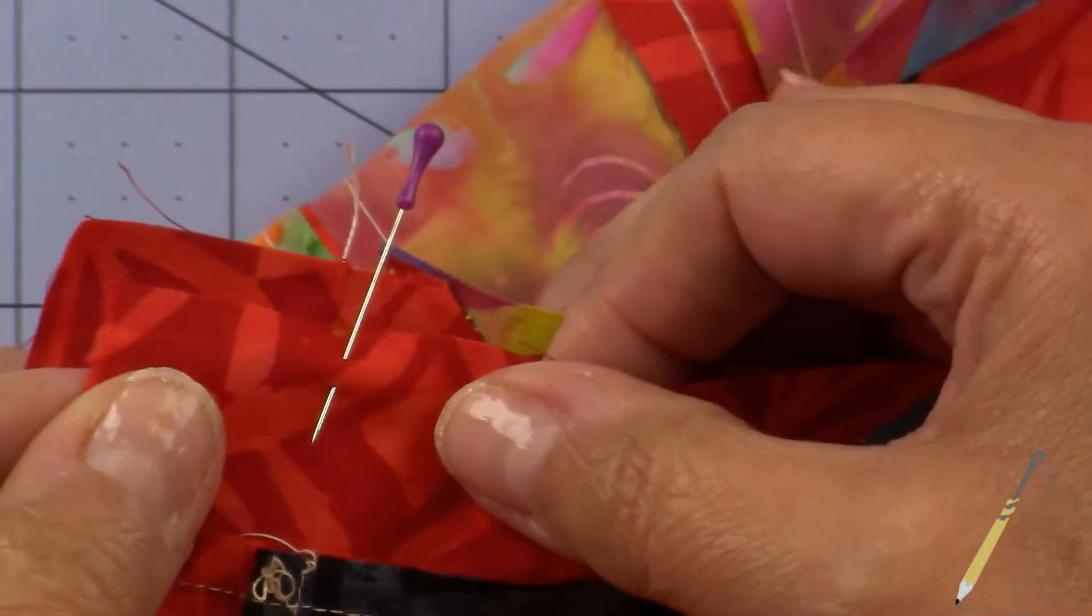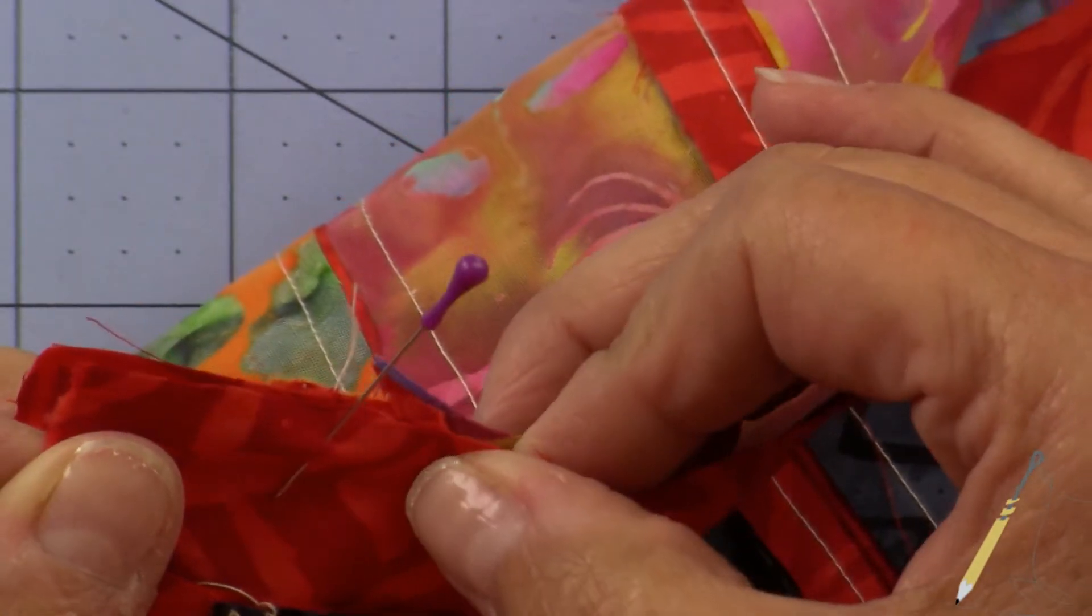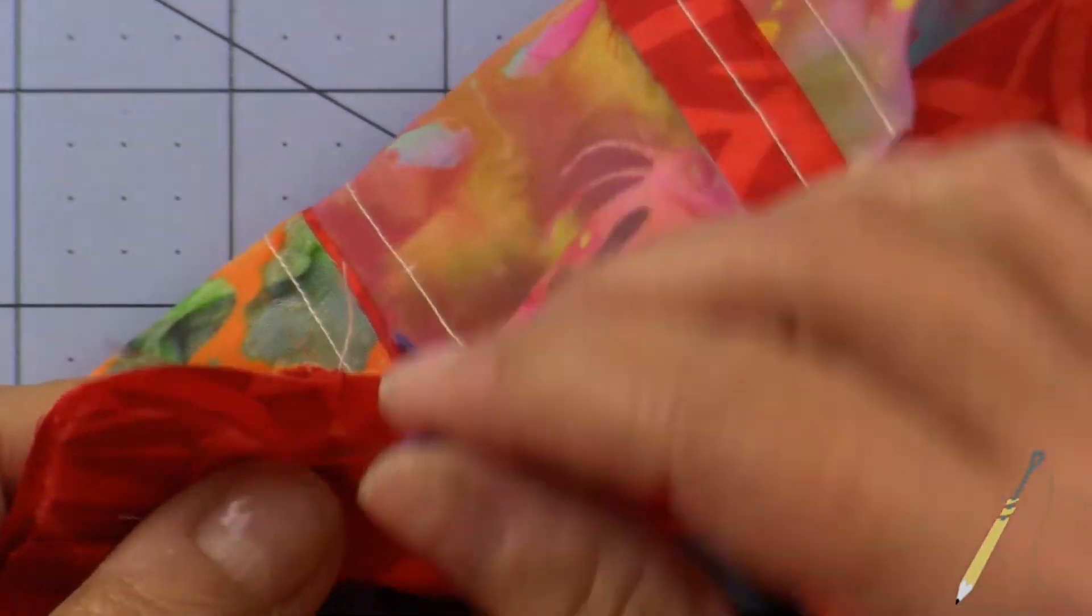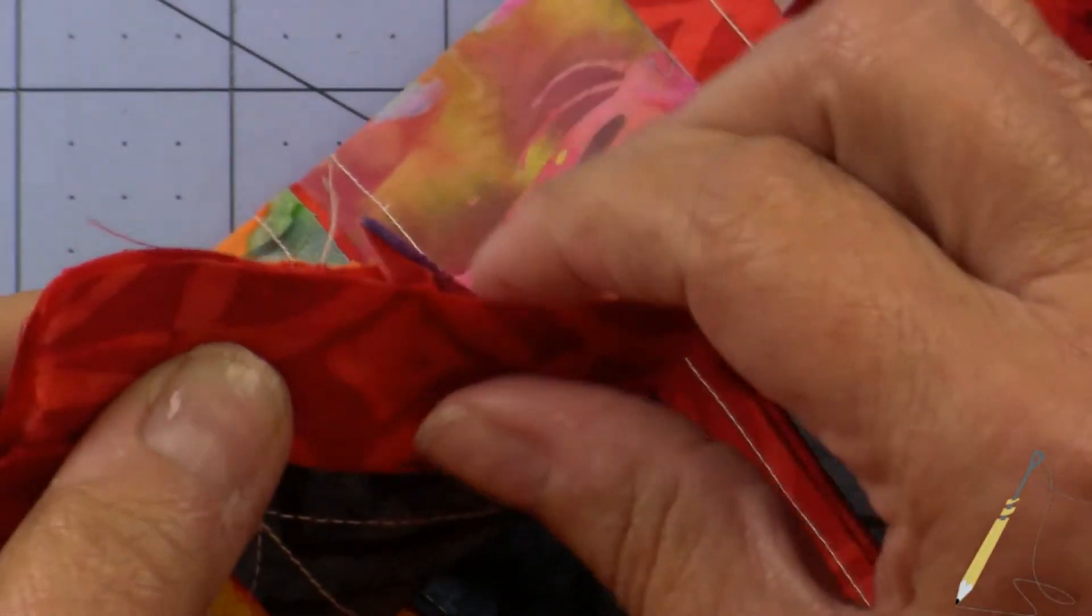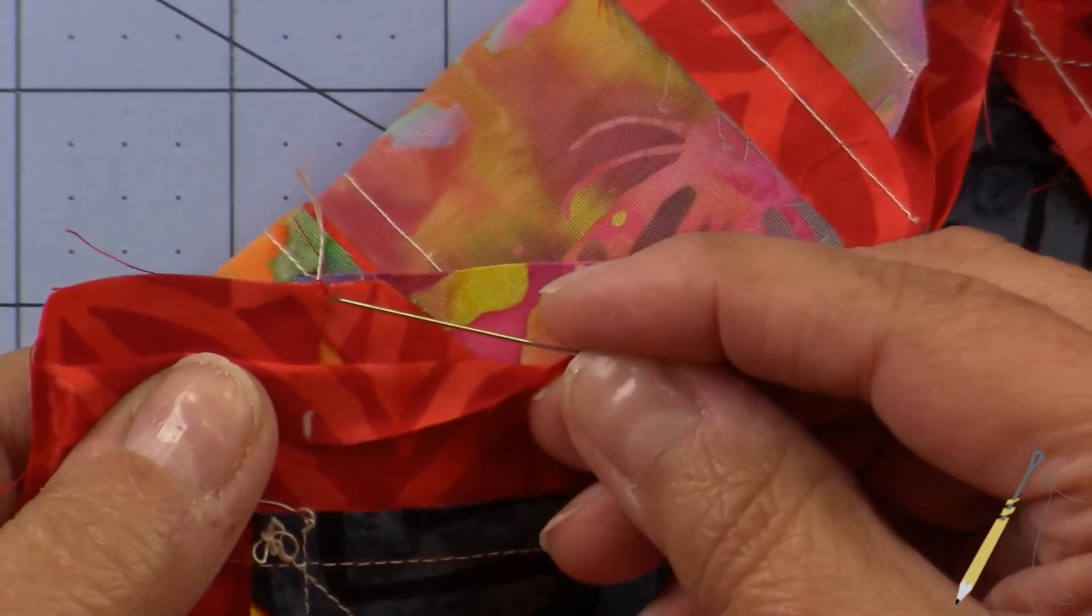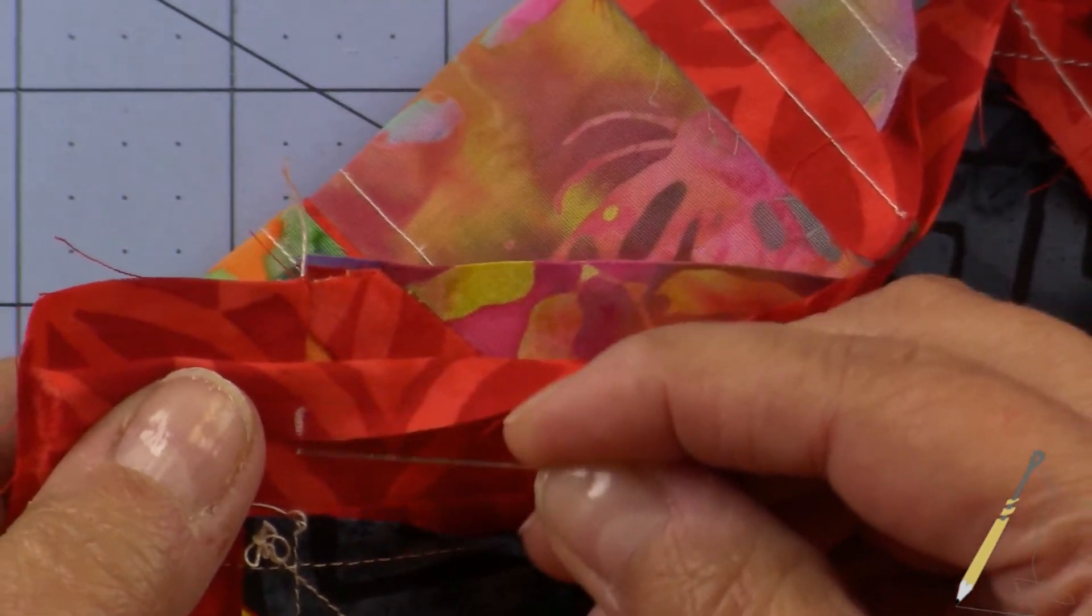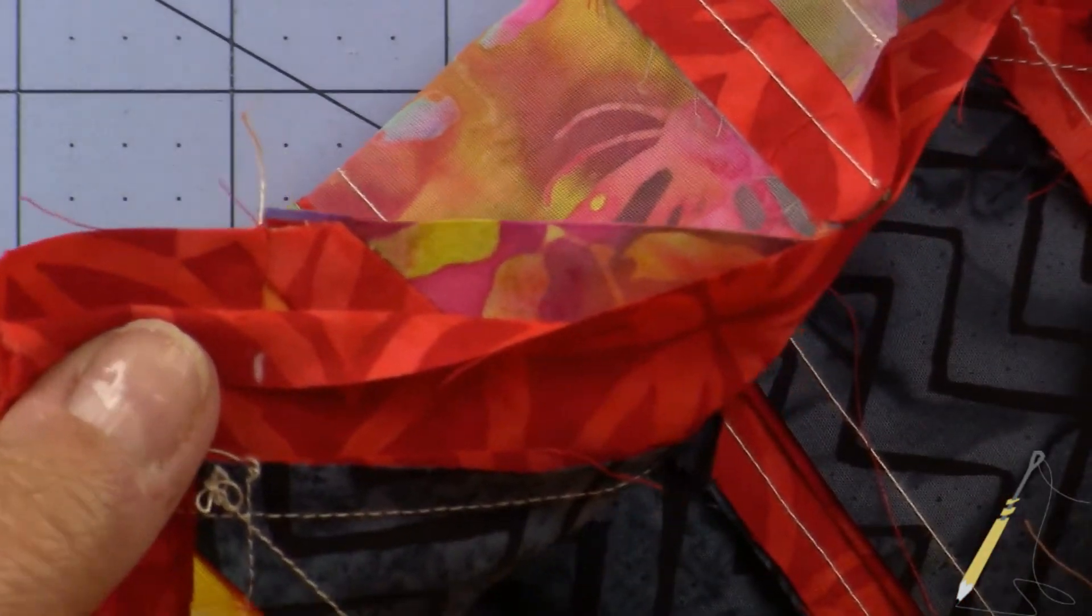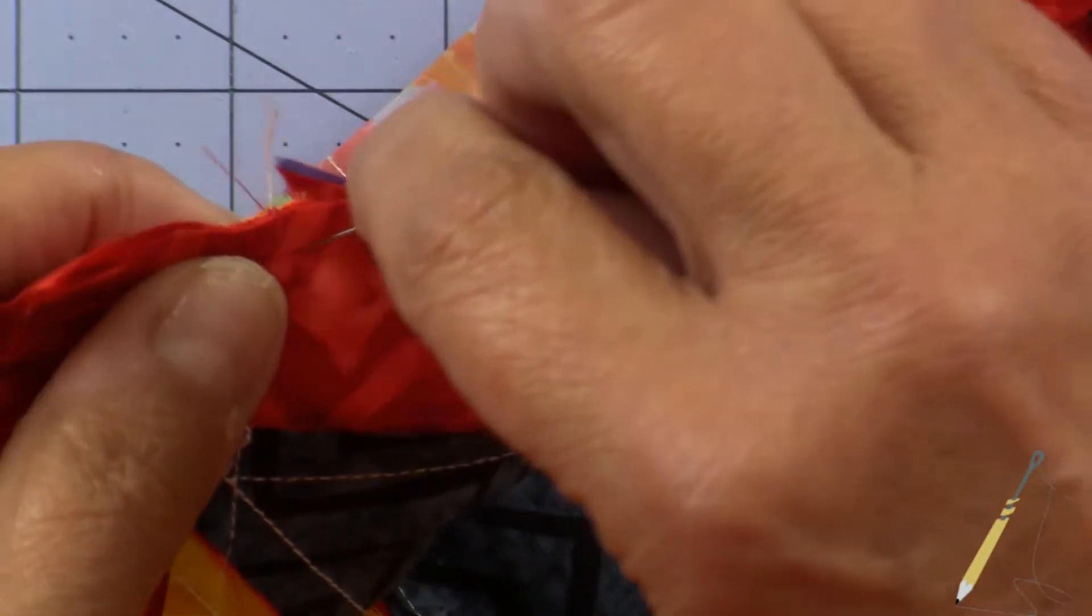Then I'm going to match the pin with this horizontal seam line. So if I pull this back now, you'll see that this seam line lines up with the marked line. Then we'll just pin that in place.